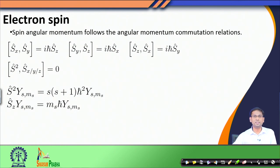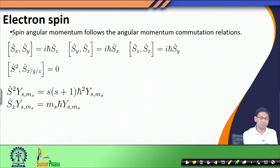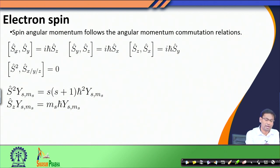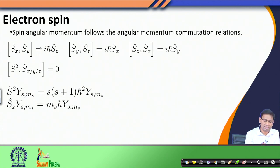The nice thing about it is that the spin angular momentum of this electron follows all the angular momentum commutation relations that we have discussed. For example, if you remember, Lx and Ly — the x and y components of the angular momentum operator — did not commute with each other. Similarly, now S replaces L: the x and y components of the spin angular momentum do not commute with each other.